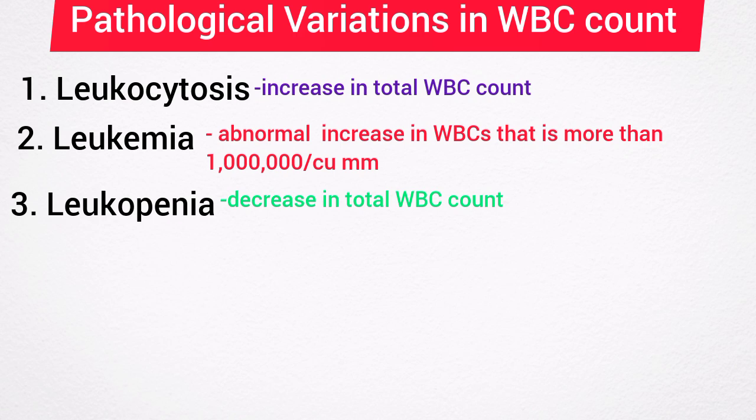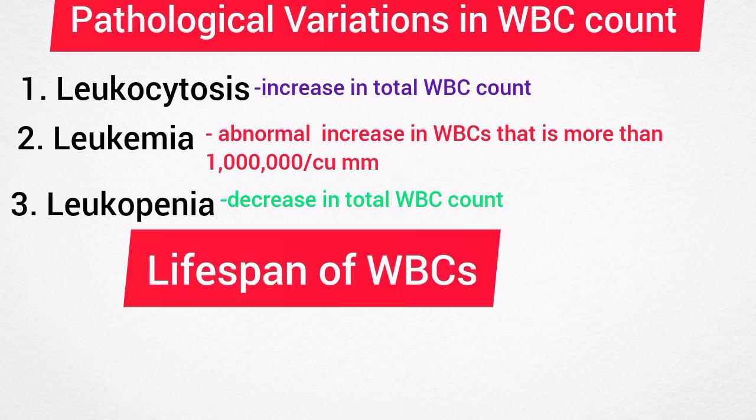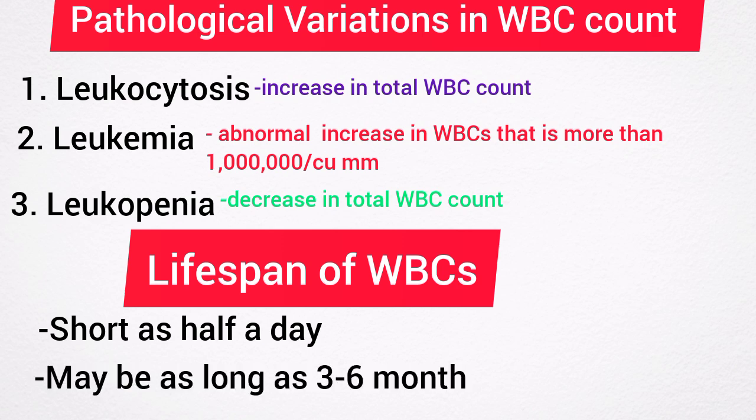The lifespan of white blood cells is not constant. It depends upon the demand in the body and their function. The lifespan of the cells may be as short as half a day or as long as three to six months.